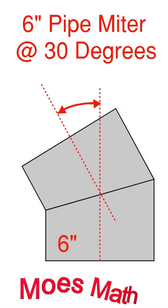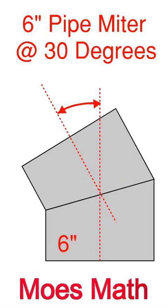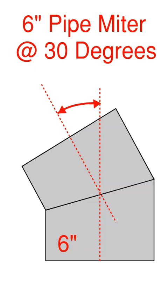How are you doing today? Welcome to Moe's Math. Today we're going to cover full-size pipe miters. In this case we have a 6-inch pipe and we're going to make a 30-degree turn.